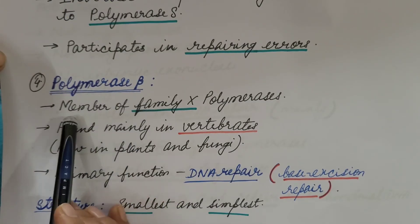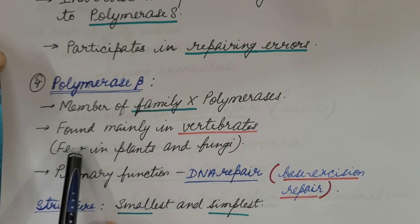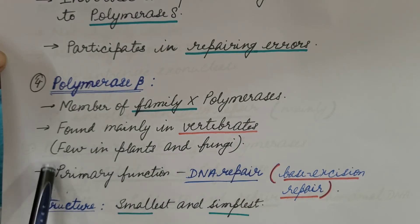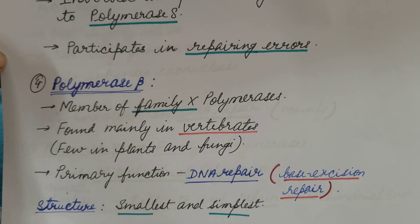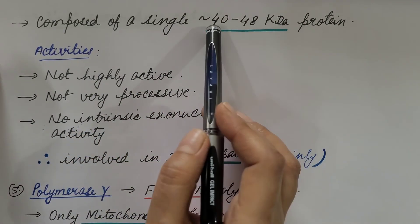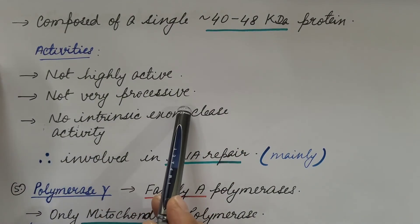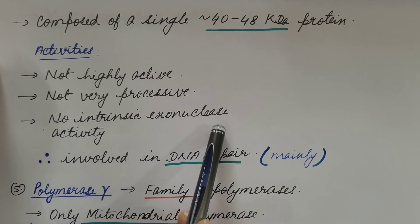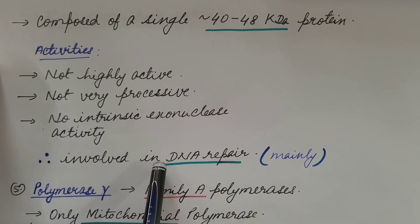Fourth is DNA polymerase beta. It is a member of the family X polymerases. It is mainly found in vertebrates, but a few are also present in plants and fungi. The primary function it performs is DNA repair — specifically base excision repair, which we will discuss in a separate video on DNA repair. Structure-wise, it is the smallest and simplest polymerase enzyme in eukaryotes, composed of a single protein approximately 40 to 48 kilodaltons. It is not highly active, not very processive, and lacks intrinsic exonuclease activity. Therefore, it is involved mainly in DNA repair.